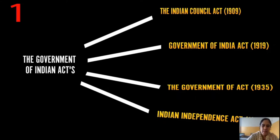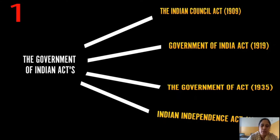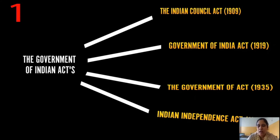Today we are going to discuss about the Government of India Acts. In the years 1909, 1919, 1935, and 1947, many governmental acts were passed by the colonial British government in order to have rule over India and to regulate the administration.